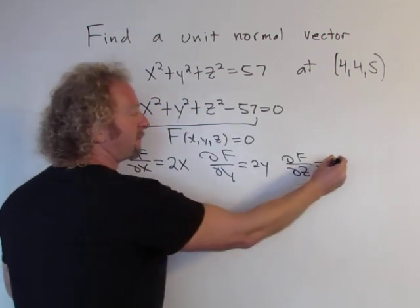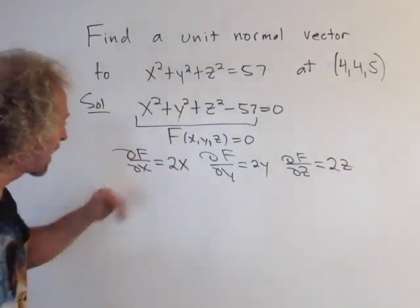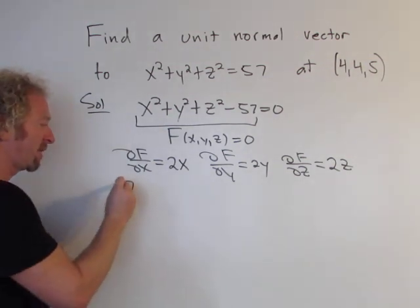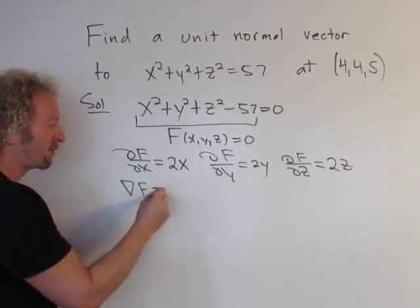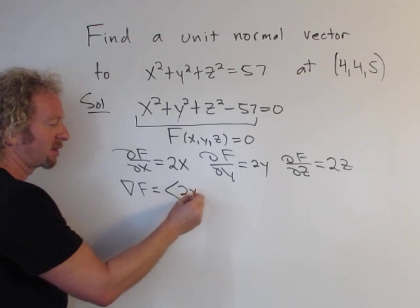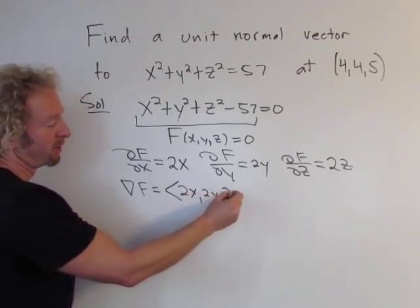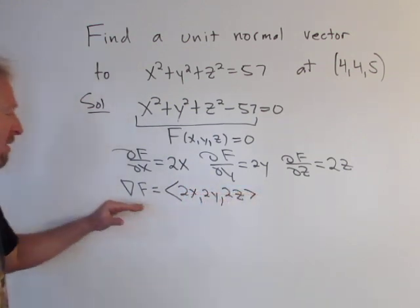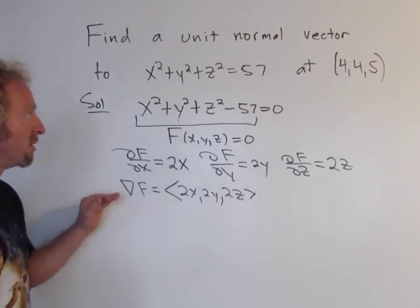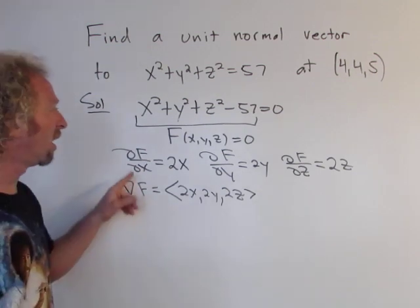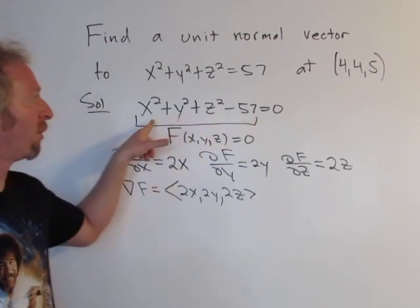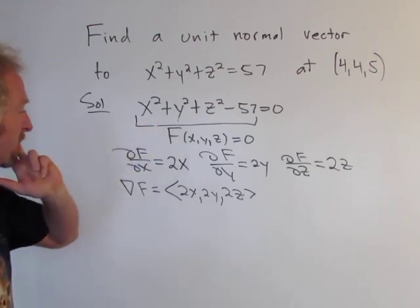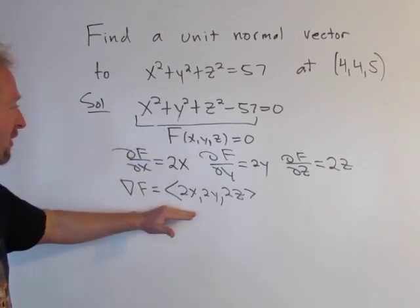So now we can write down the gradient vector. The gradient of big F is equal to <2x, 2y, 2z>. So that's the gradient vector. This vector is normal or orthogonal to every point on this level surface.